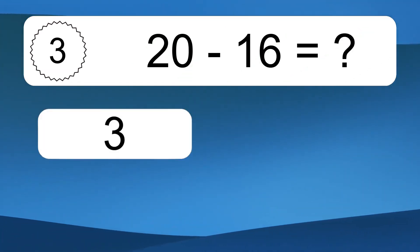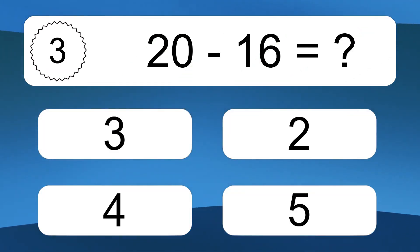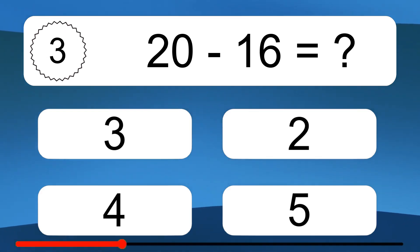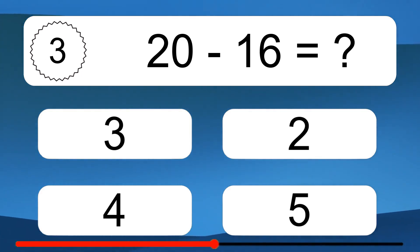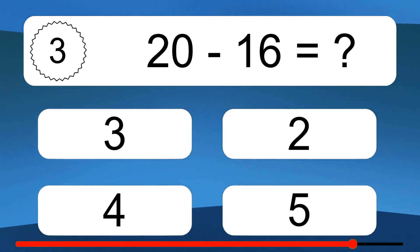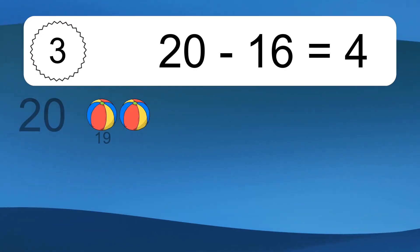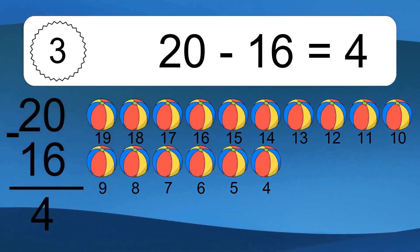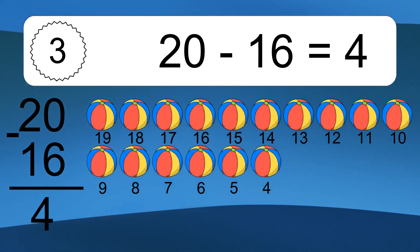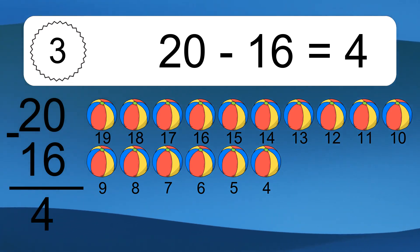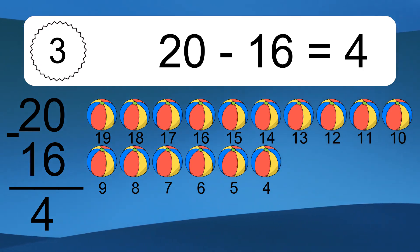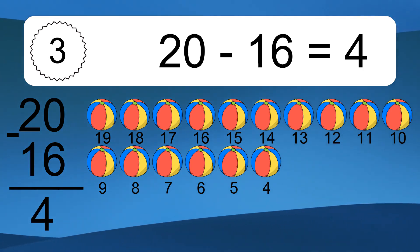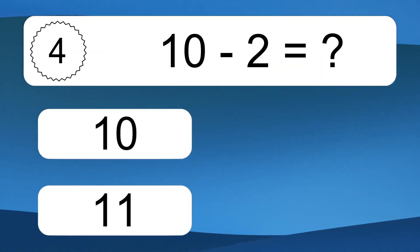20 minus 16 equals what? 20 minus 16 equals 4. Let's count it: 19, 18, 17, 16, 15, 14, 13, 12, 11, 10, 9, 8, 7, 6, 5, 4.